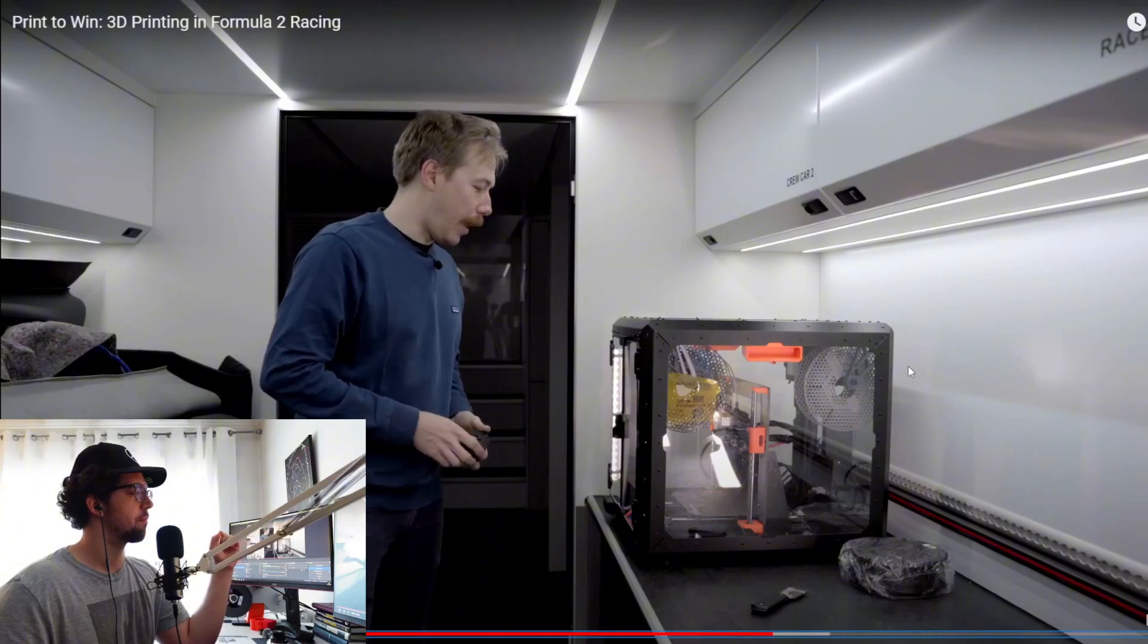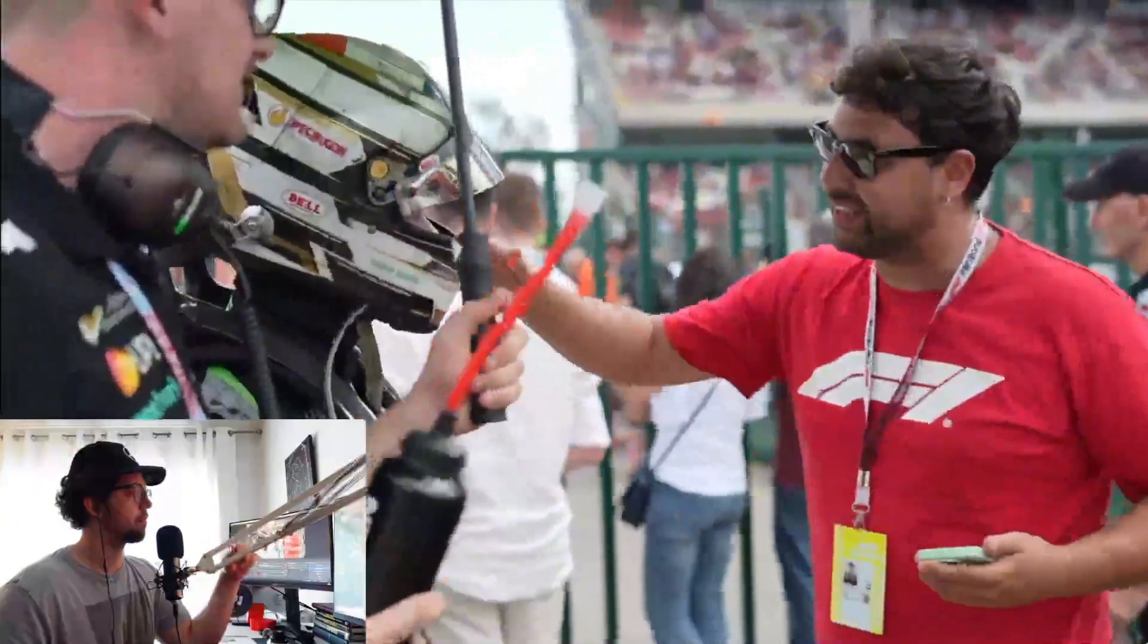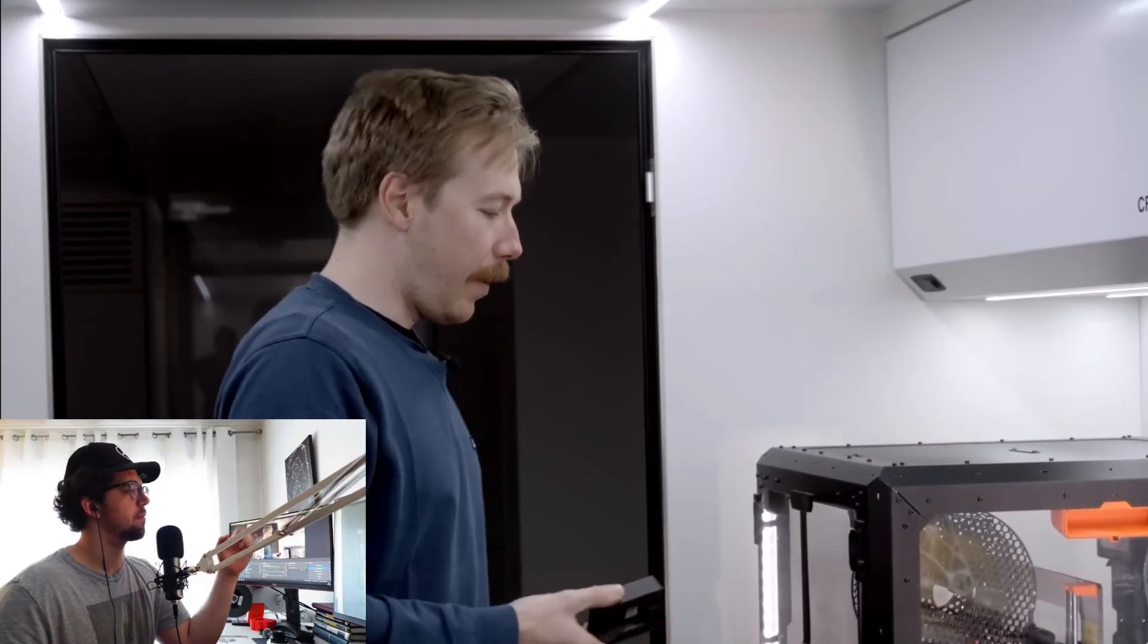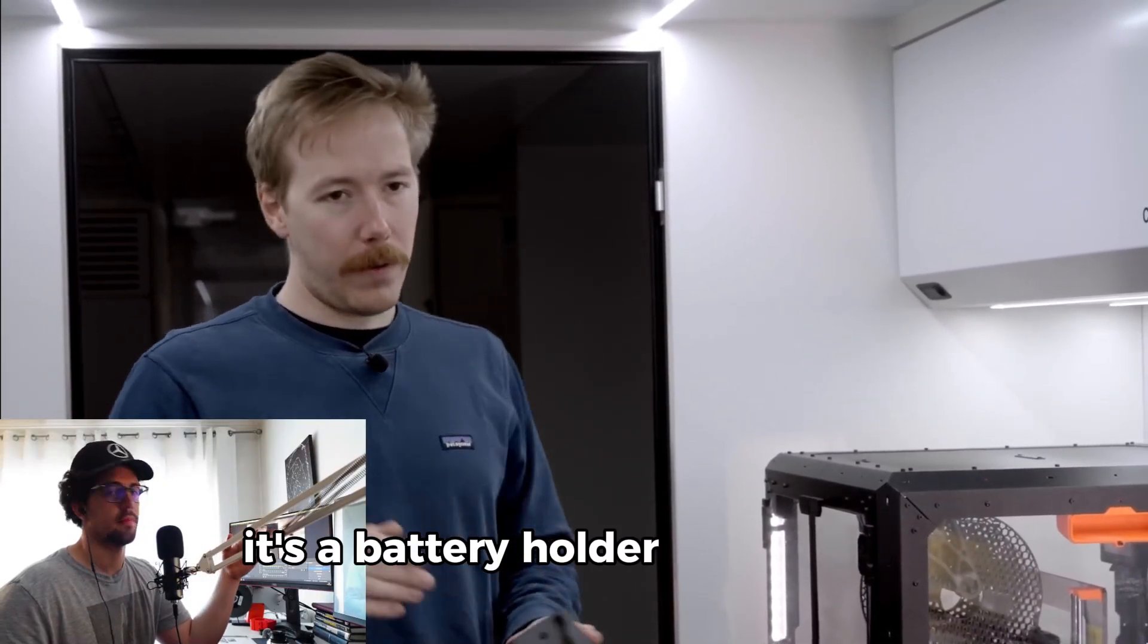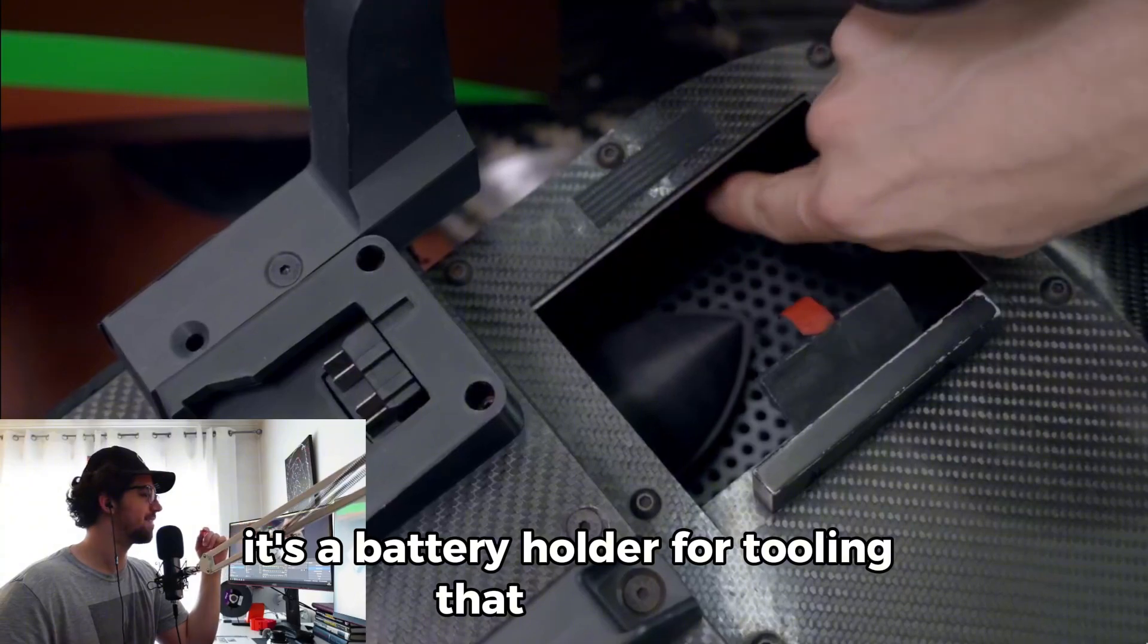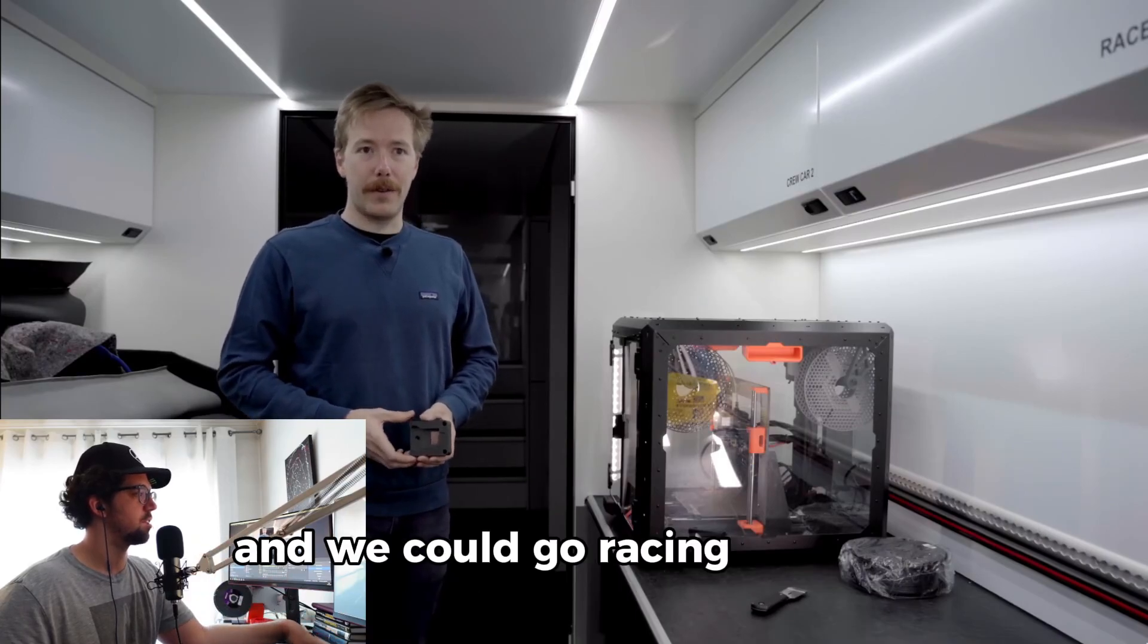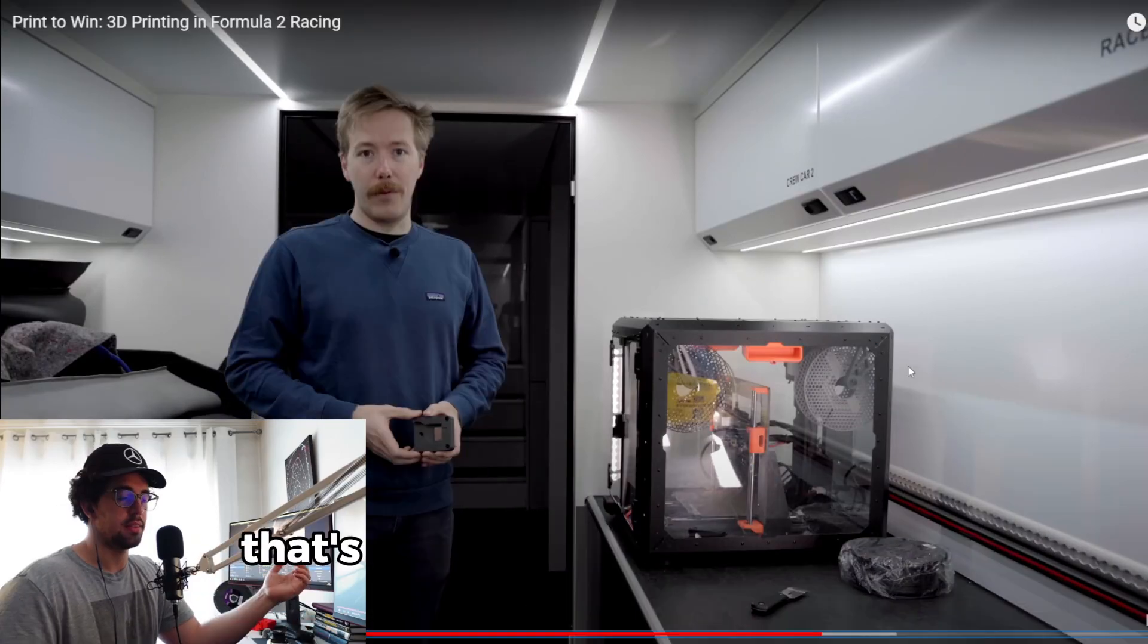We are in our racing truck, this is our MK3 that always travels with us. We use it always at the track when something breaks. I just have this part in my hands, it's a battery holder for tooling that we have, and it breaks on the circuit, and I straight away 3D printed it, and in the evening it was fixed.